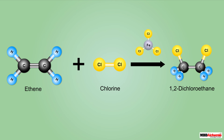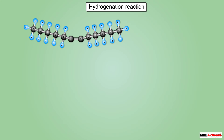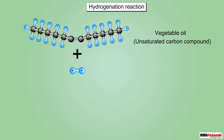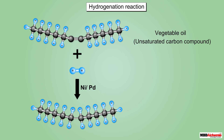Some addition reactions of carbon compounds also have industrial significance. One such addition reaction is the hydrogenation of vegetable oils. Vegetable oils are long-chain unsaturated compounds that undergo the addition reaction with hydrogen in the presence of nickel or palladium to form vegetable ghee, which is a saturated compound.